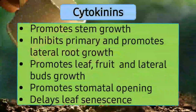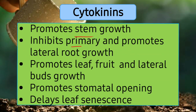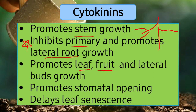The next growth stimulator is cytokinin. It promotes stem growth. It also inhibits primary root growth — meaning longitudinal root growth — but promotes lateral root growth, which involves branching. It promotes leaf, fruit, and lateral bud growth. An important function not seen in the other growth stimulators is that it promotes stomatal opening. Similar to the others, it also delays leaf senescence.